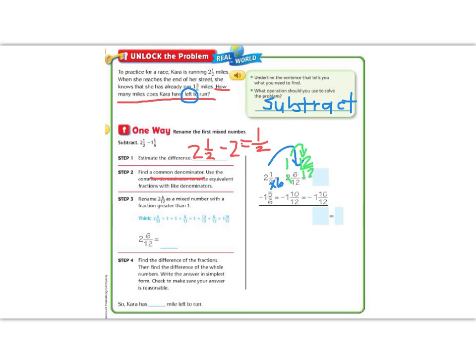Just like when we borrow with a regular number, we have to add the number that's already there. So 6 twelfths plus 12 twelfths gives us 18 twelfths. So I can rename this number as 1 and 18 twelfths. 2 and 6 twelfths is the same as 1 and 18 twelfths — I've just borrowed and renamed so that I have nice, easy numbers.